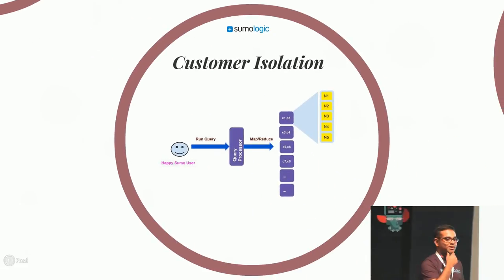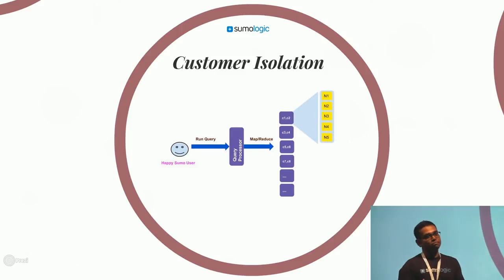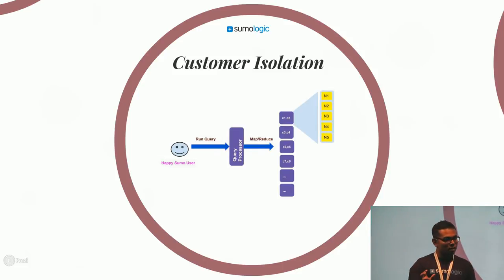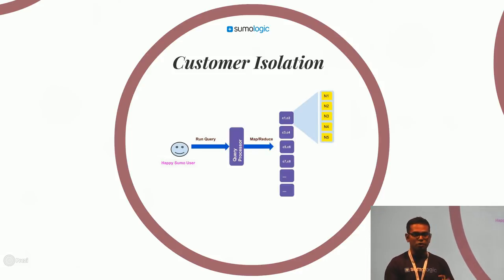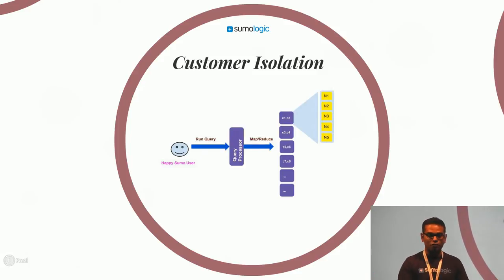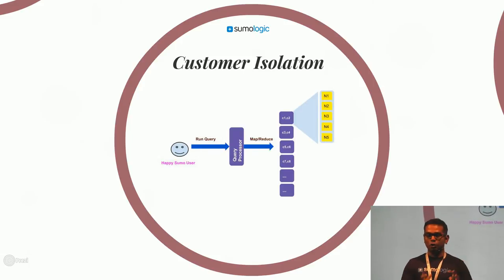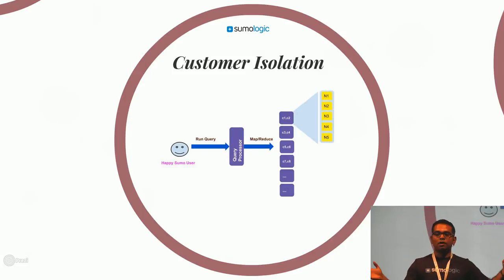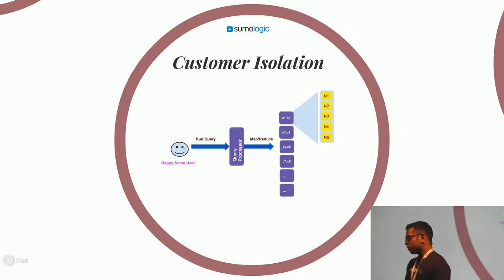The first challenge: a typical production cluster for us has a thousand-plus index serving nodes. You don't want all your customers sitting together — there'll be a lot of noise, it's not monitorable, and you don't know whether a customer putting excessive load is causing the entire index serving to go down. So what you do first is customer isolation: group similar customers together, pod them — break the thousand nodes into groups of ten servers each, put ten customers each on a pod.